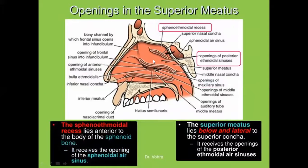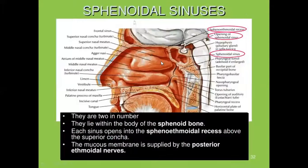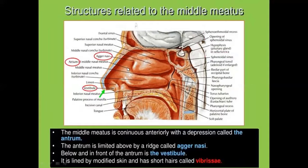The superior meatus is the space beneath the superior nasal concha, and it receives the opening of the posterior ethmoidal air sinus. Above the superior nasal concha is a triangular depressed area called the sphenoethmoidal recess, which receives the opening of the sphenoidal air sinus. In front of the middle meatus is a depressed area called the atrium of the middle meatus, just above the vestibule, limited above by a faint ridge called the agger nasi.